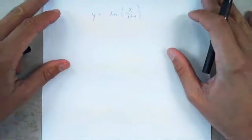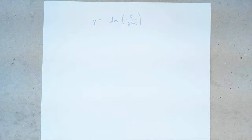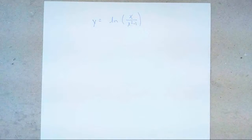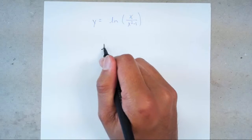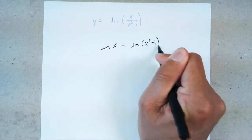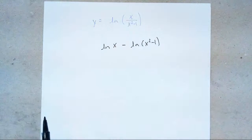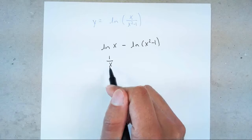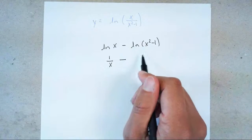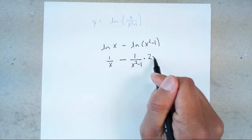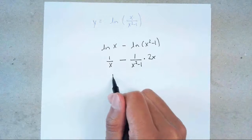What if things get more complicated — what if there's a fraction, meaning division? I notice the division so I want to separate it: ln(x) minus ln(x² − 1). I subtracted because the top and bottom are being divided. Now I find the derivative: the derivative of ln(x) is 1/x times the derivative of the inside (which is 1), so just 1/x. Minus the derivative of ln(x² − 1), which is 1 over (x² − 1) times 2x.